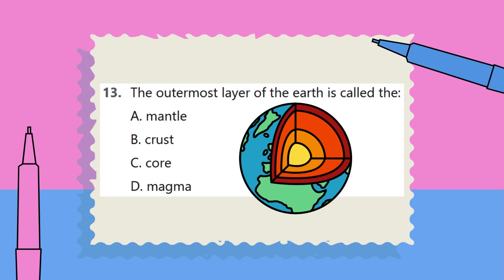Question 13. The outermost layer of the earth is called the: A. Mantle. B. Crust. C. Core. D. Magma.